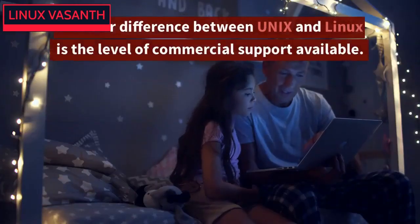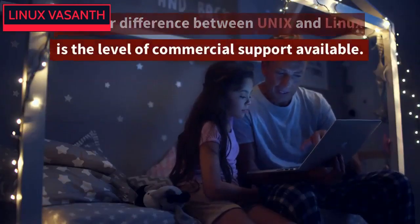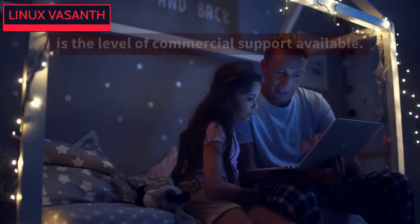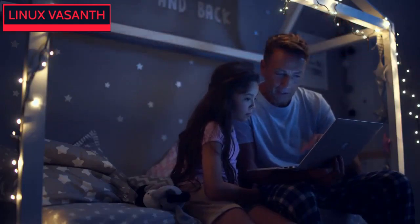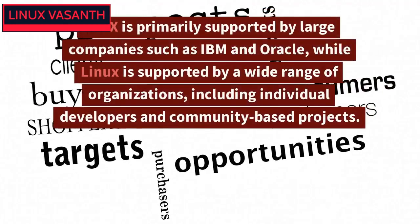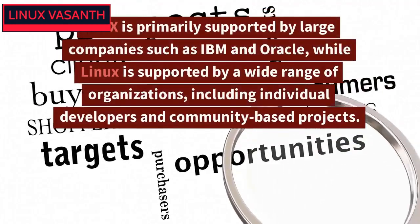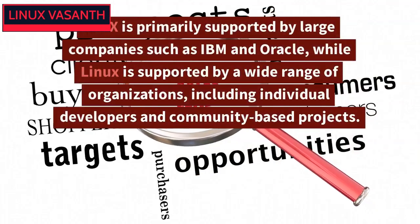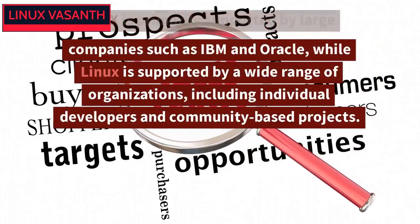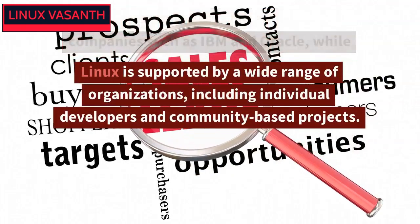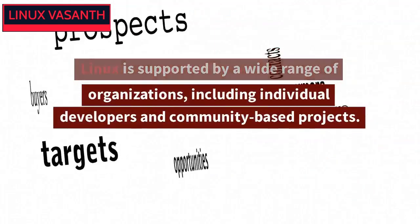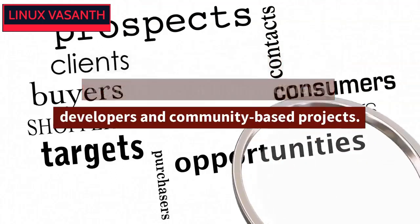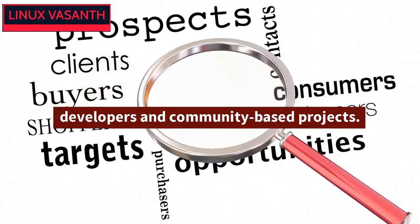Another difference between Unix and Linux is the level of commercial support available. Unix is primarily supported by large companies such as IBM and Oracle, while Linux is supported by a wide range of organizations, including individual developers and community-based projects.